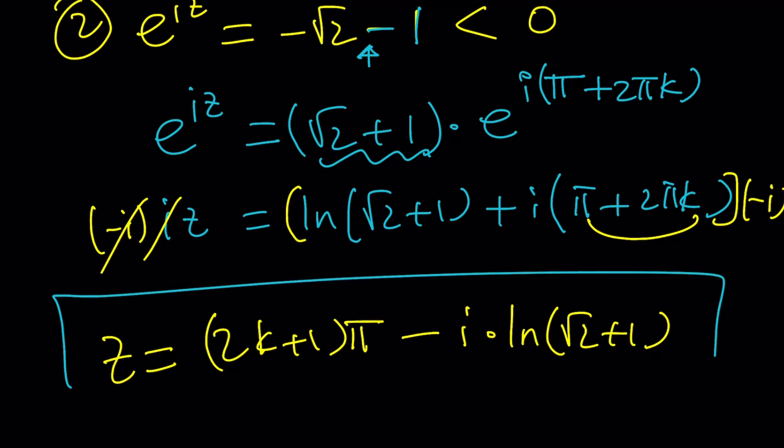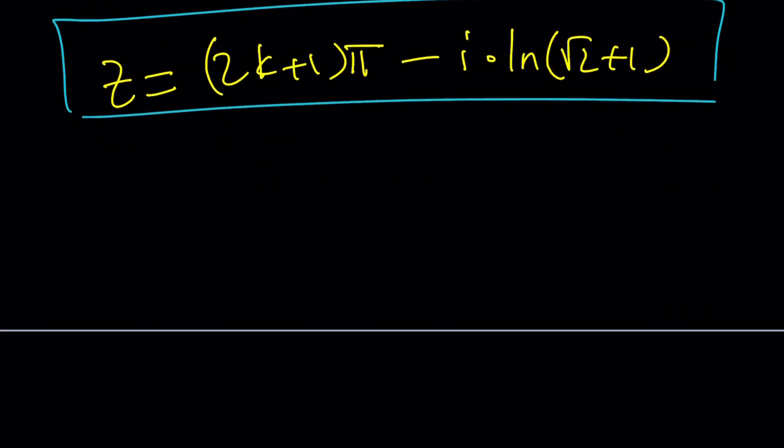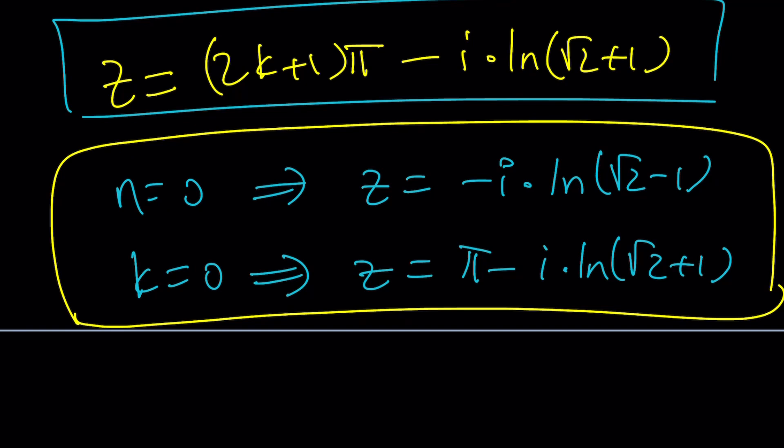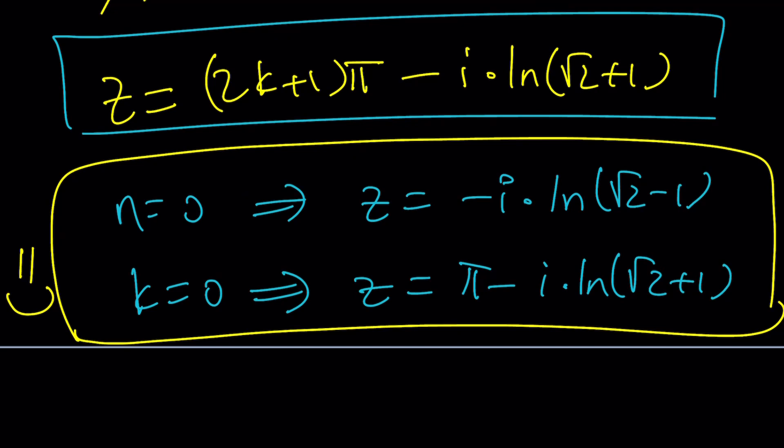Now let's go ahead and take a look at some special cases. And that's going to be for n equals 0. We're going to get z equals negative i times ln root 2 minus 1, an imaginary number. And k equals 0 is going to give us z equals pi minus i times ln root 2 plus 1. This is a complex number in standard form a plus bi, which is the name of this channel. And this brings us to the end of this video. Thank you for watching. I hope you enjoyed it. Please let me know. Don't forget to comment, like, and subscribe. I'll see you next time. Until then, be safe, take care, and bye-bye.